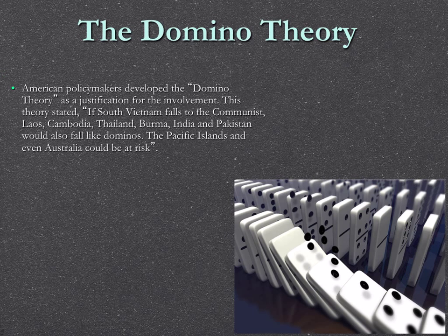The theory — and you've probably heard this before — was the domino theory. Johnson said that if South Vietnam falls to the communists, then Laos, Cambodia, Thailand, Burma, India would follow, and eventually we'd be fighting communists on the streets of San Francisco. If you let one fall. There was also the related policy of containment.